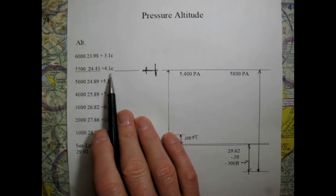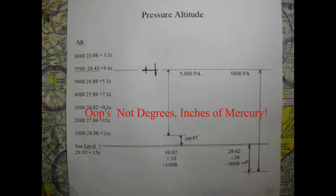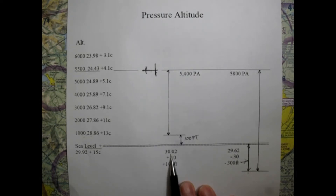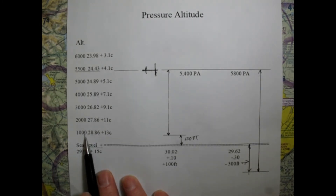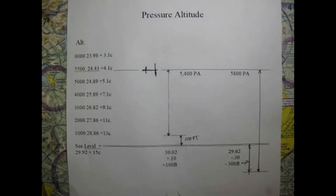We'll use that temperature of 4.1°C later in our calculations. Now let's say we have a high pressure day at 30.02. This would move our standard datum plane upward, since you cannot have a higher pressure above a lower pressure. The difference between 29.92 and 30.02 is 0.1 inches. Since 1 inch equals 1,000 feet, 0.1 inch equals 100 feet - so the standard datum plane moves up 100 feet.